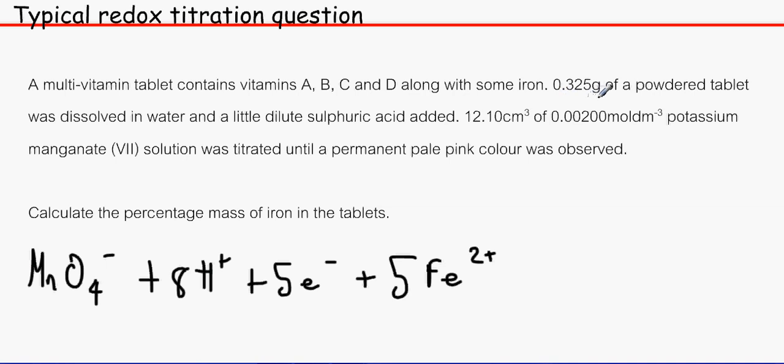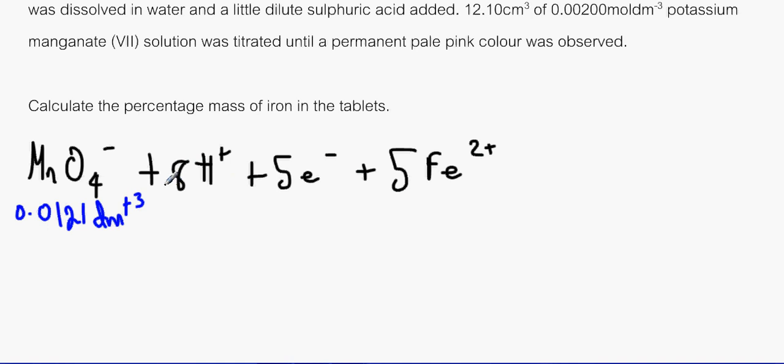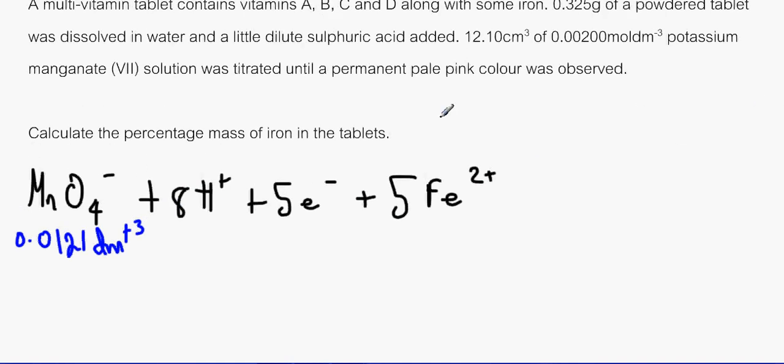We have all this information here and I like to put them in the relevant department should I say. So we've got 0.325 g of powder tablet dissolved in water, and 12.1 cm³ of potassium manganate. So I'm going to write it here, I'm going to write 0.0121 dm³. I've automatically changed it into dm³ just for ease. And we've also have this molar concentration over here which is 0.002, which is the concentration, and that's the volume. So instinctively I'd be able to find out the moles by doing n = C × V. And that would be 0.0121 × 0.002, and that would make 2.42 × 10⁻⁵ moles.